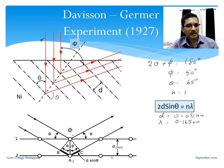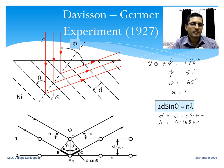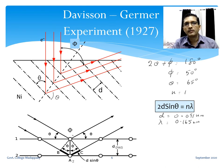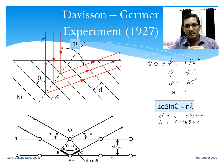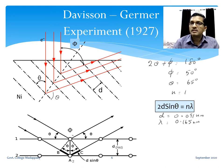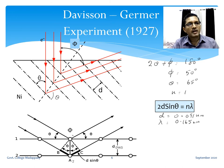Whether the diffraction takes place between electrons scattered from the surface layer only or from adjacent layers, the formula for maximum intensity is slightly different and the interatomic separation differs. But when using either formula, the wavelength of the electron beam producing diffraction maxima at a 50-degree scattering angle must be 0.165 nanometers.